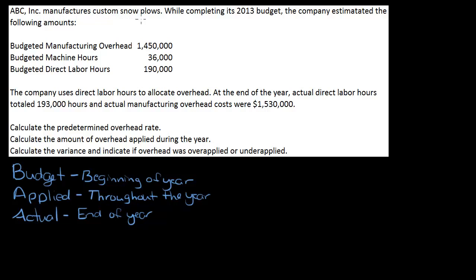ABC Inc. manufactures custom snow plows. While completing its 2013 budget, the company estimated the following amounts: budgeted manufacturing overhead of $1,450,000; budgeted machine hours of 36,000; and budgeted direct labor hours of 190,000. Notice we've got machine hours and direct labor hours — somewhere in the problem they're going to tell us which one to use, so make sure you look out for that.